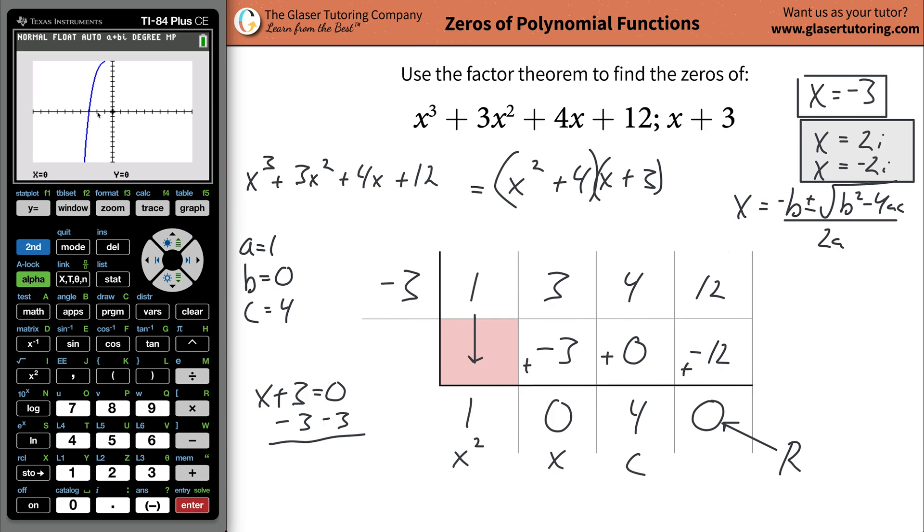And where does it cross? Negative one, negative two, looks like around negative three. Oh, wait a minute. There it is. Right? So you can also use a calculator not only to check yourself, but hopefully make this make a little bit more sense.